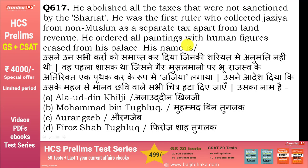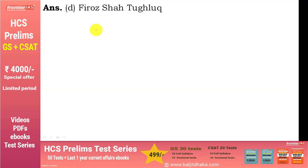वह पहला शासक था जिसने गैर-मुसलमानों पर भू-राजस्व के अतिरिक्त एक पृथक कर के रूप में Jizya लगाया और उसने आदेश दिया कि उसके महल से मानव चेहरे वाली सभी चित्र हटा दिए जाएं। उसका नाम है Firoz Shah Tughlaq। यह एक line ही काफी है - 'collected jizya from non-Muslims as a separate tax' - यह Firoz Shah Tughlaq को identify करती है।